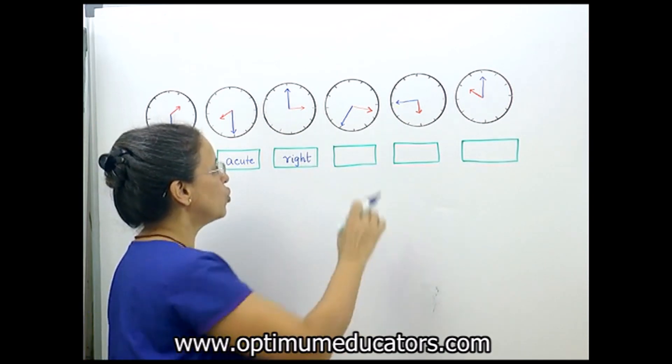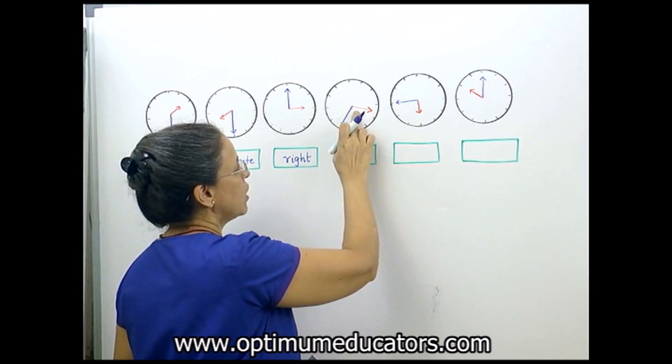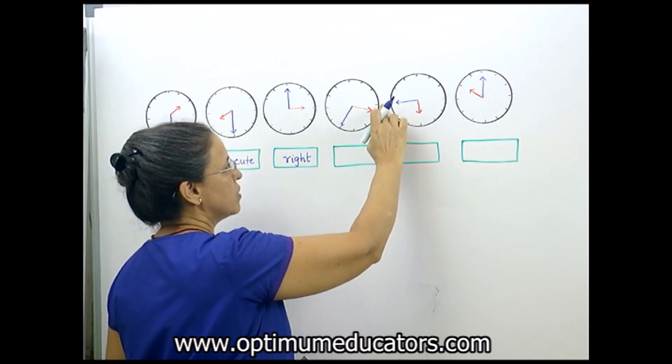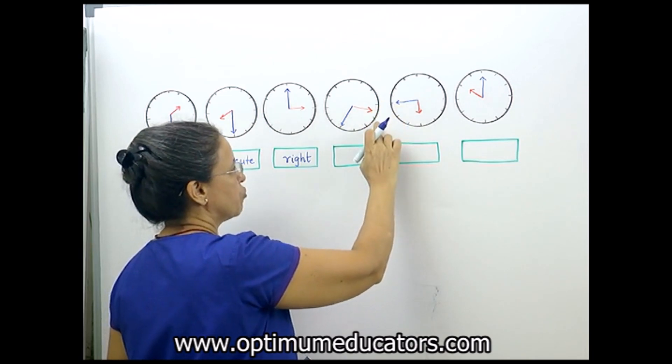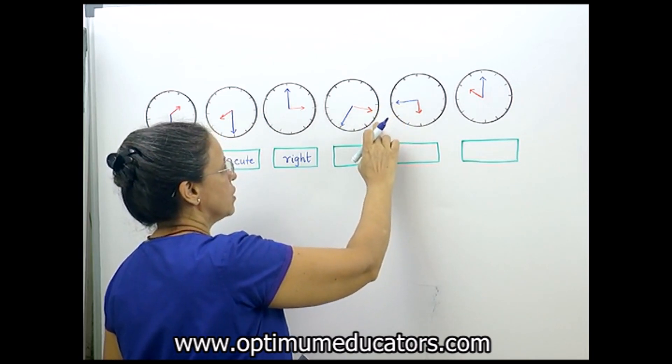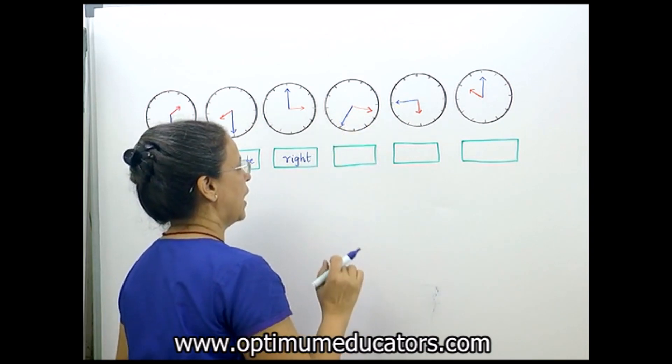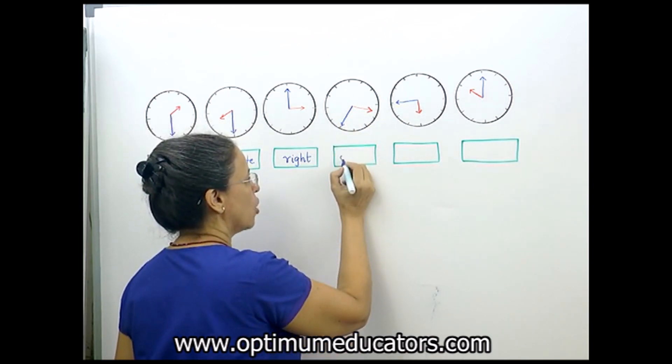Now if you look over here, the small hand is between three and four, which means it is past three but not yet four o'clock. So here the time is 3:35, and the angle is obtuse.